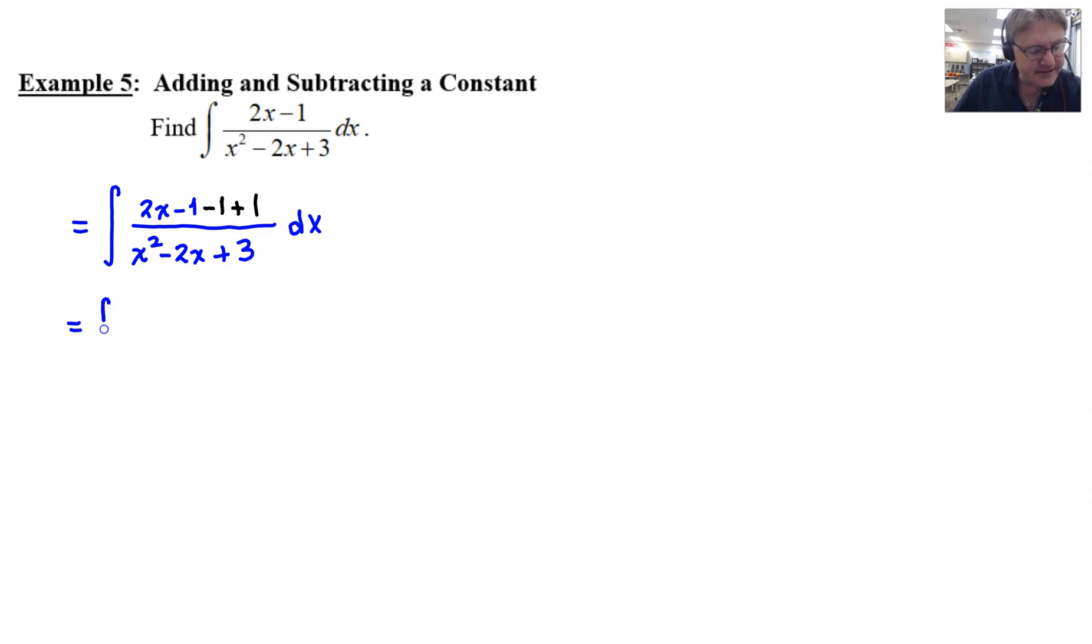So here's what we've got then. When we rewrite this, we're going to have 2x minus 2 over x squared minus 2x plus 3. Let's write that x a little bit better. Okay. And we'll just do this. We'll make that a separate integral with the sum add the integration of 1 over x squared minus 2x plus 3.